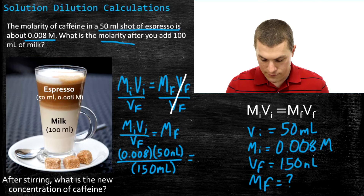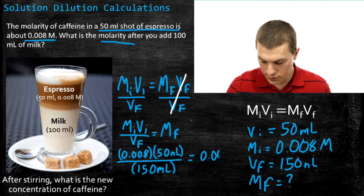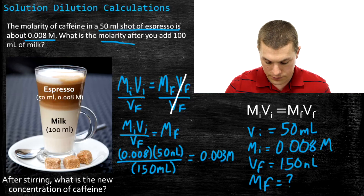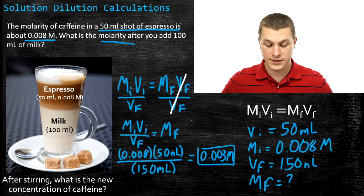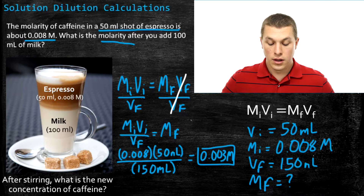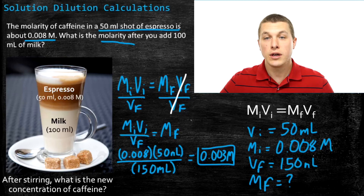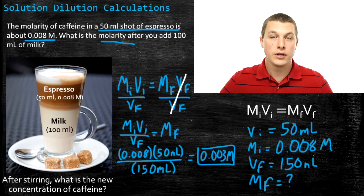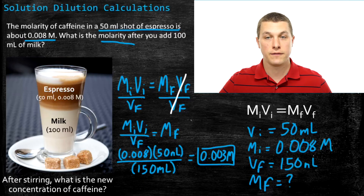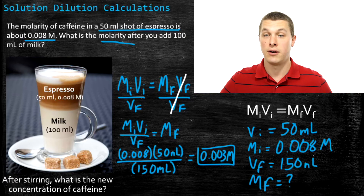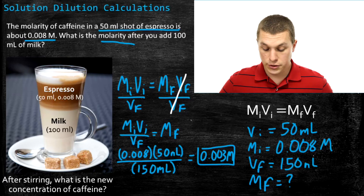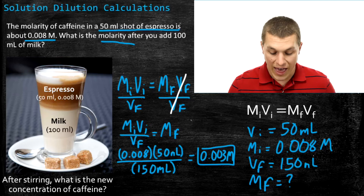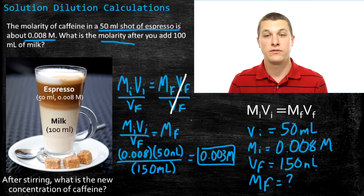When we do that math, we get 0.003 molar. That is the concentration of caffeine in our latte after we've mixed it up. Note that you can use any units of volume with this equation — the only requirement is that you use the same unit for volume on both sides and the same unit for concentration on both sides. So our answer is 0.003 molar.